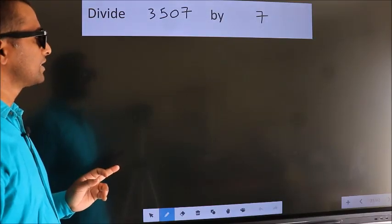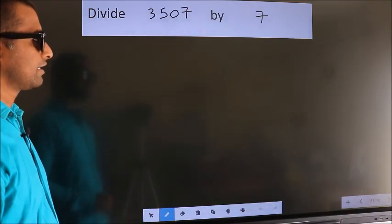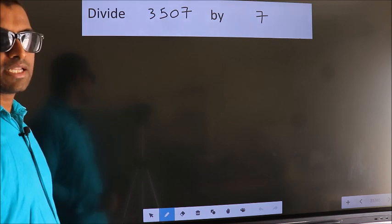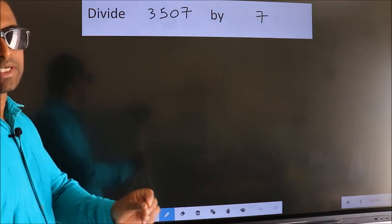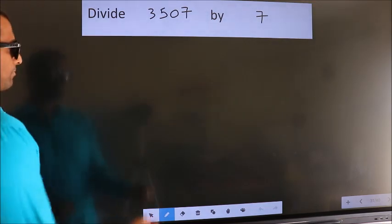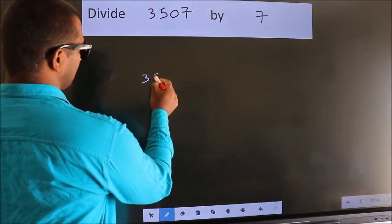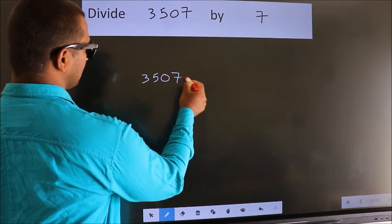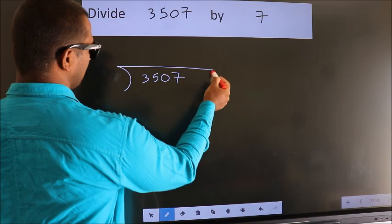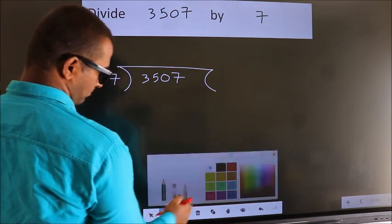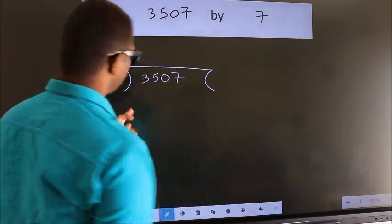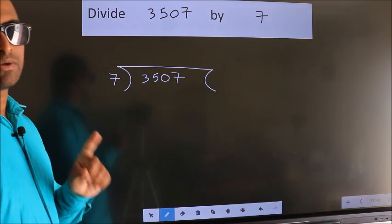Divide 3507 by 7. To do this division, we should frame it in this way. 3507 here, 7 here. This is your step 1.